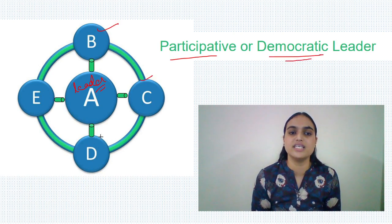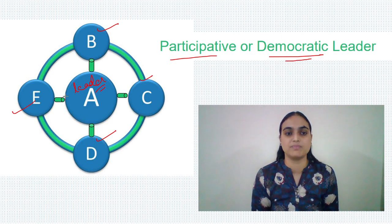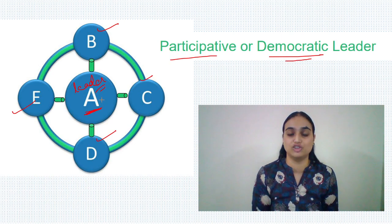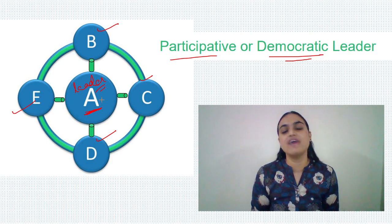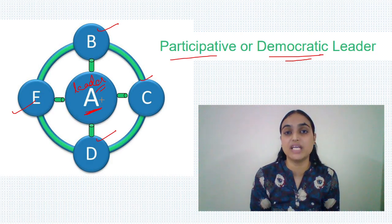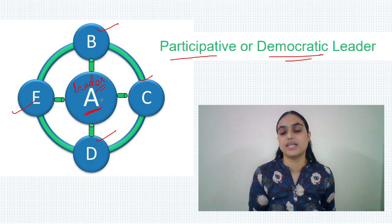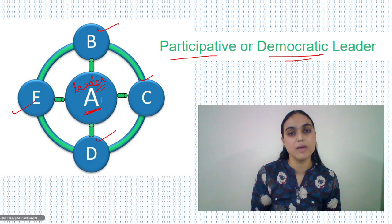So here B, C, D, E are all my subordinates. But I am sitting with them discussing the things and then taking the decisions. So participation is involved. Everyone is given a chance to speak up, to take a decision for themselves. So this is a participative or a democratic leadership style.